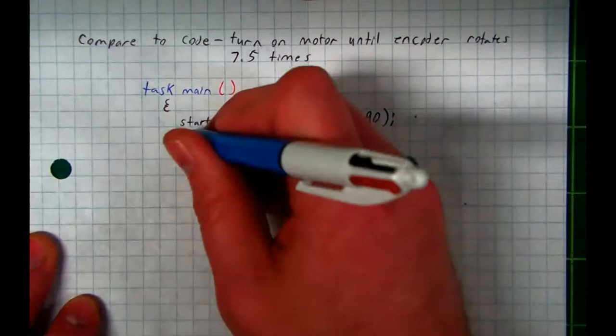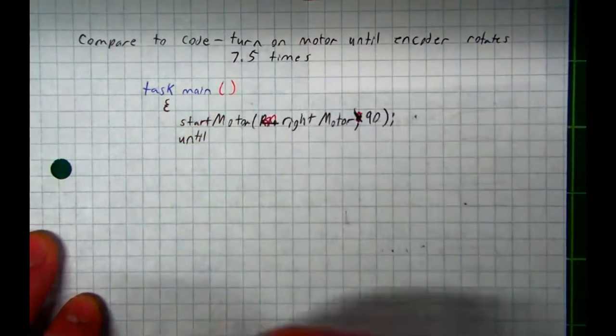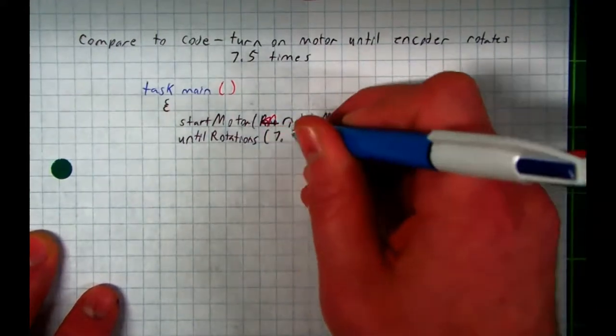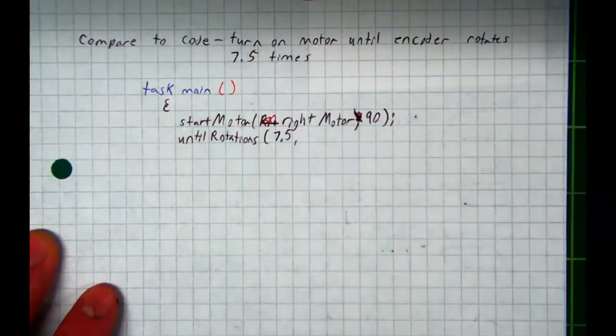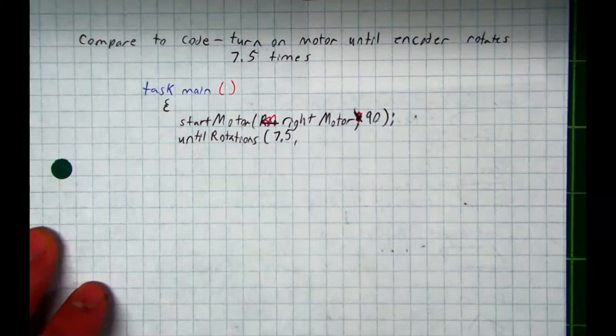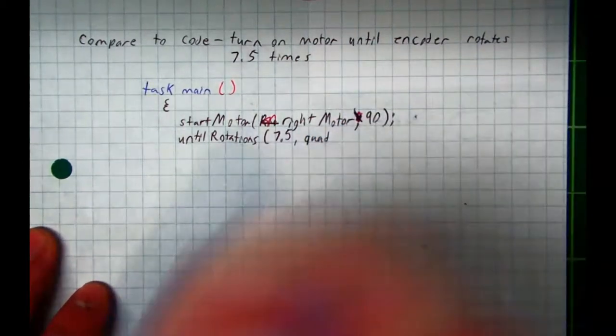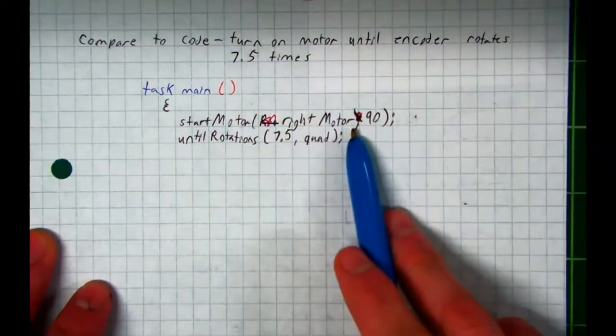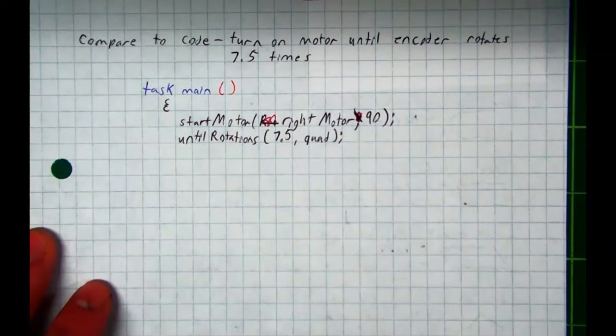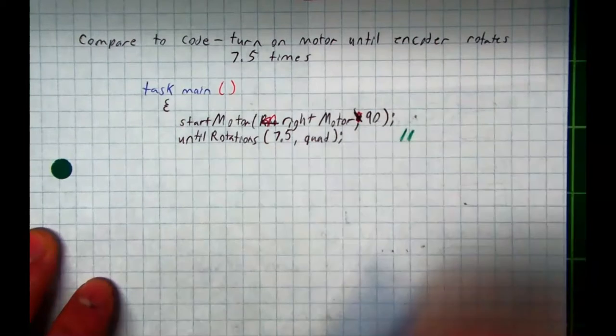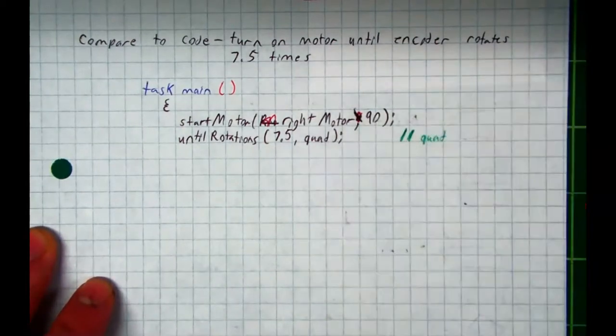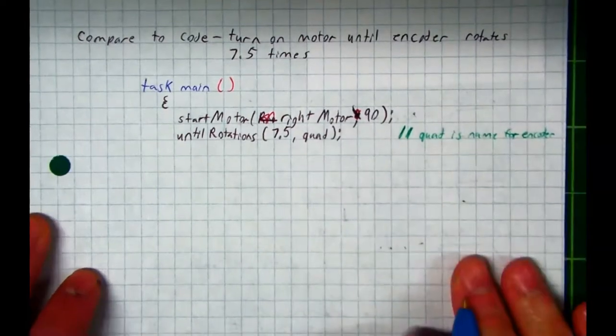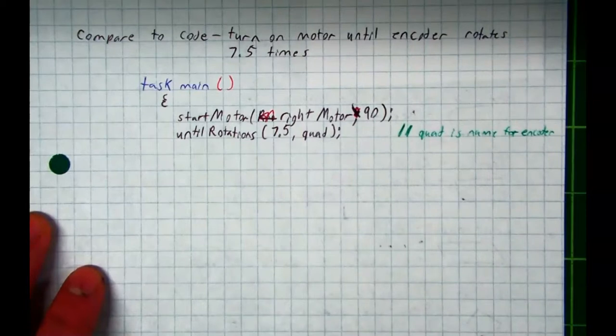And then we'll just put an until statement down. So lowercase u, until, capital R, rotations, open your parentheses. We will put the number of rotations first, 7.5, comma, and then we'll name our encoder. What is the name of our encoder? Quad. And that's just because it's a quadra-something encoder, just to give you a short name to make it convenient. Close your parentheses and add a semicolon, like we should have done here, comma, number. Just to define what quad is, quad is the name for encoder. Just in case you don't know when you look back at your notes what quad is. But hopefully at this point you do know the name of your encoder.